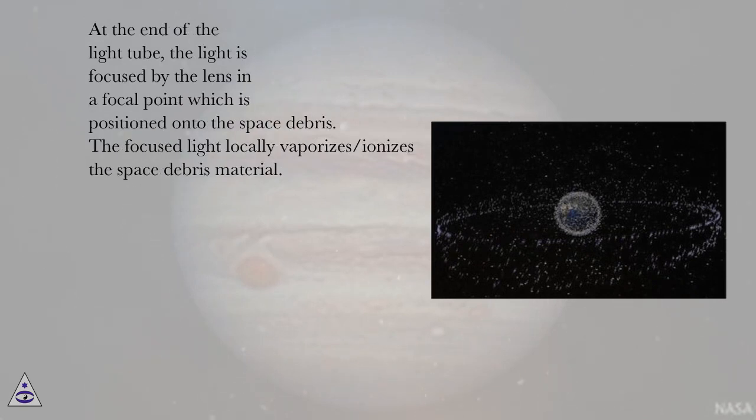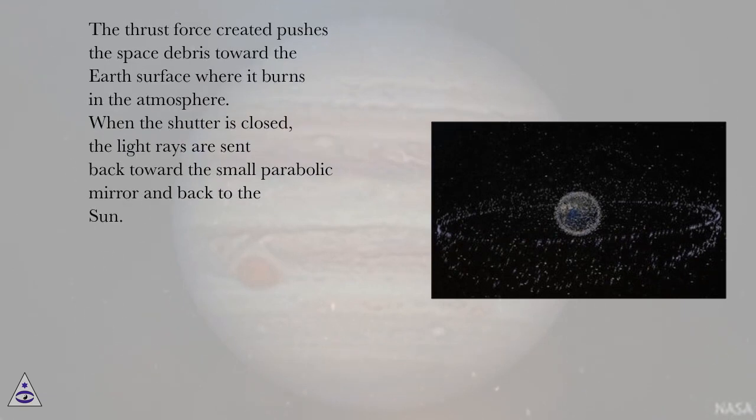At the end of the light tube, the light is focused by the lens in a focal point which is positioned onto the space debris. The focus light locally vaporizes or ionizes the space debris material. The thrust force created pushes the space debris toward the Earth's surface where it burns in the atmosphere. When the shutter is closed, the light rays are sent back toward the small parabolic mirror and back to the sun.